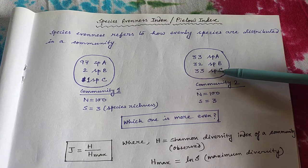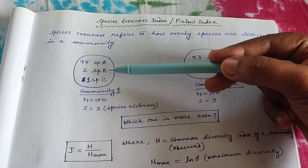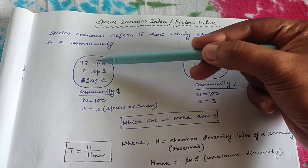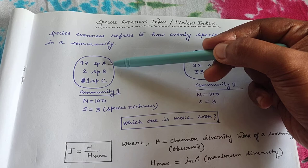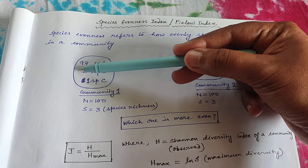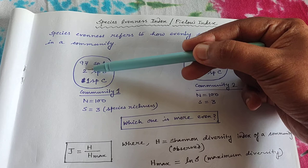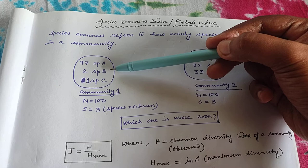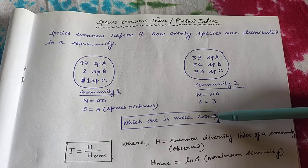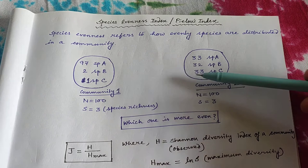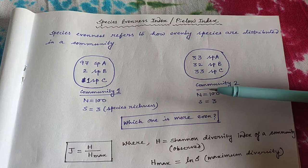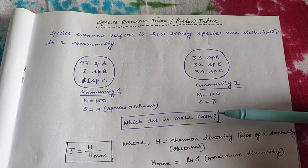In community 1, species A is clearly the dominant species because 97 out of 100 individuals belong to species A. The variation in individual numbers across the three species is very large: 97, then 2, then 1. So community 1 is obviously less even than community 2. As we have taken a small example, it is easy to observe which one is more even, but there is a formula through which you can also determine evenness for larger communities.